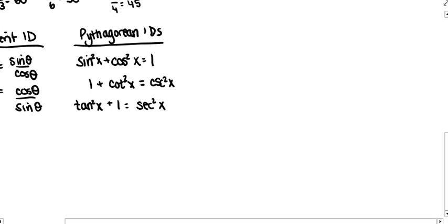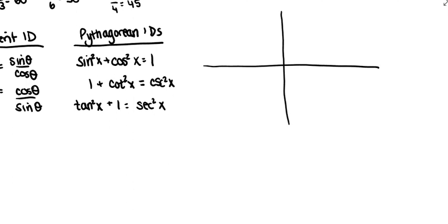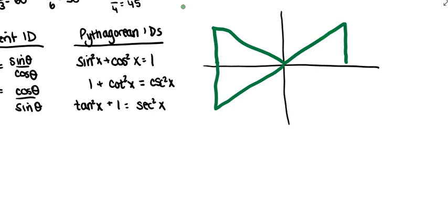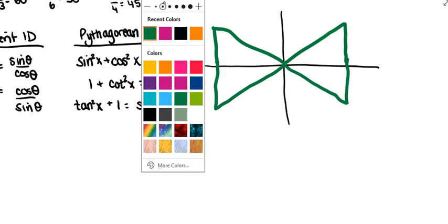The last thing we need to know is our reference angles. Reference angles are always drawn between the terminal side of our angle and the x-axis. I'm thinking about those reference angles as being bow-tie angles where theta always represents the angle formed between the x-axis and the terminal side. So there's a quick rehash of everything you need to remember. Now let's get to the good stuff and start solving some trig equations.